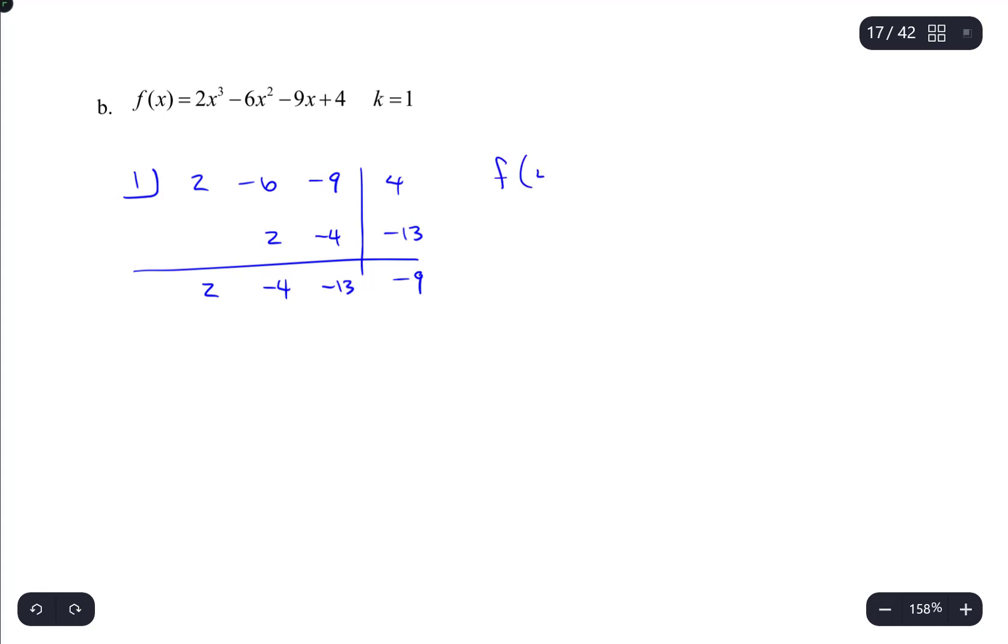So f of 1 is equal to negative 9, and therefore it's not equal to 0. So no, k equals 1 is not a zero of f(x).